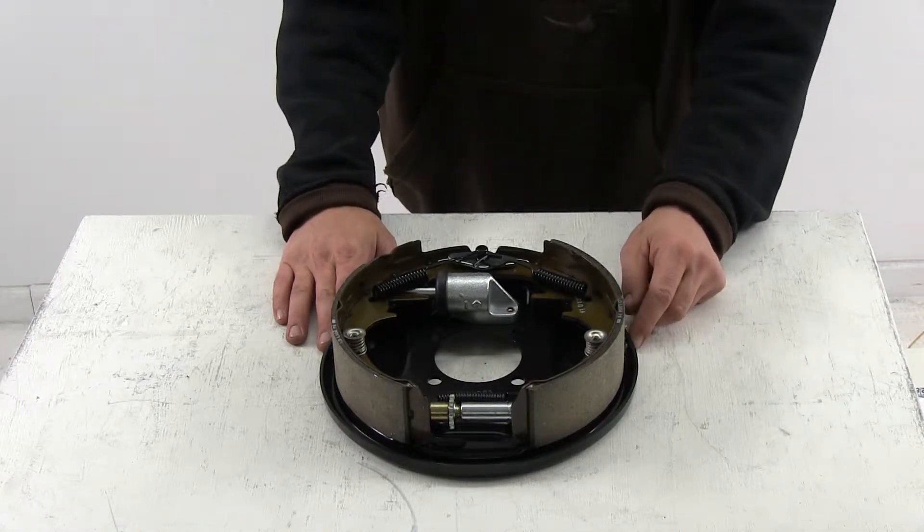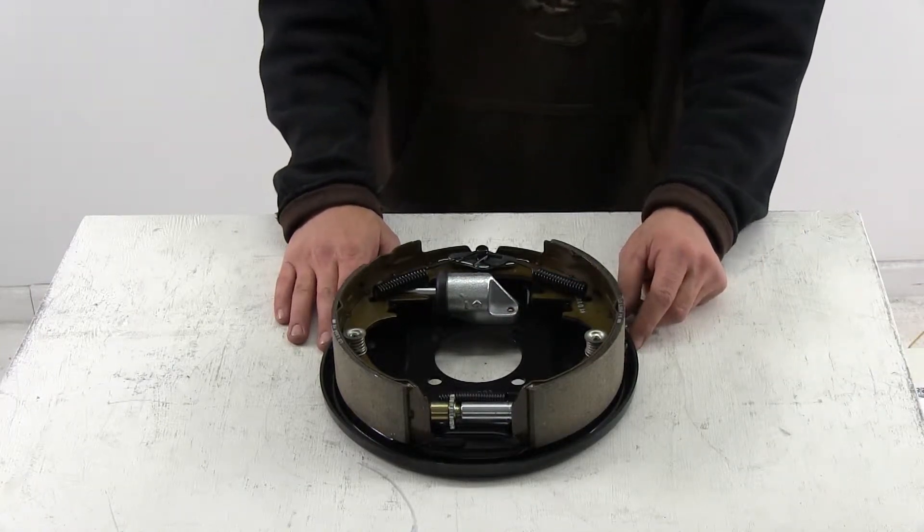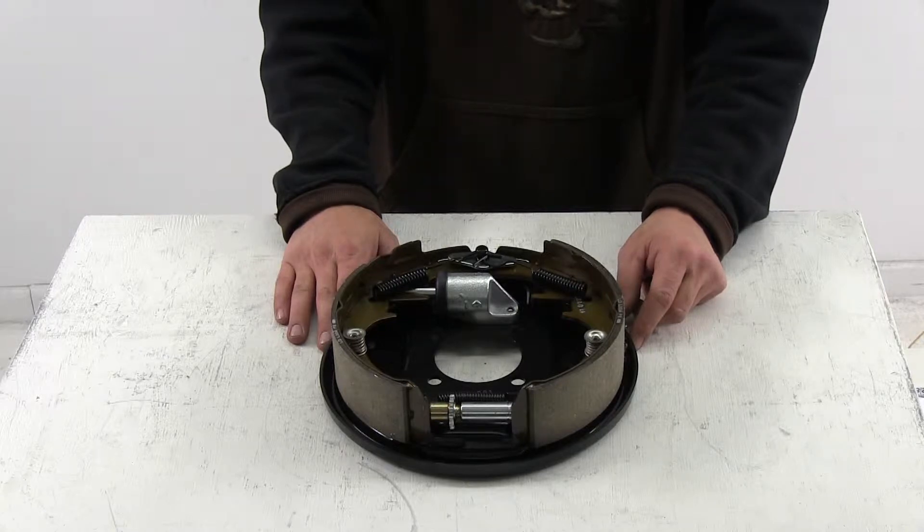Today we're looking at the Titan Hydraulic Trailer Brake Assembly, part number T187-8800.